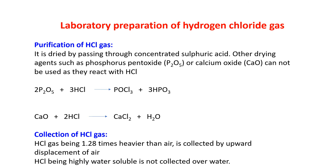The purification of HCl gas: it is dried by passing through concentrated sulfuric acid. Other drying agents such as phosphorus pentoxide P2O5 or calcium oxide CaO cannot be used because they react with HCl. P2O5 cannot be used for the drying purpose of HCl gas. That is why we use concentrated sulfuric acid.